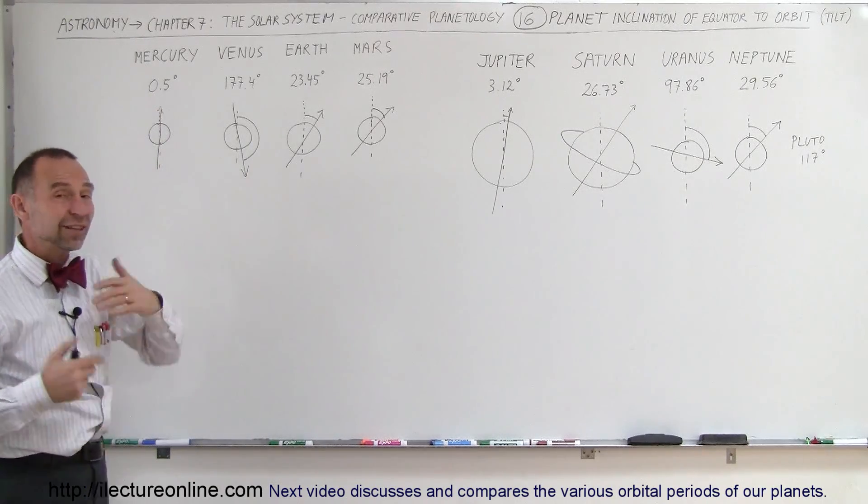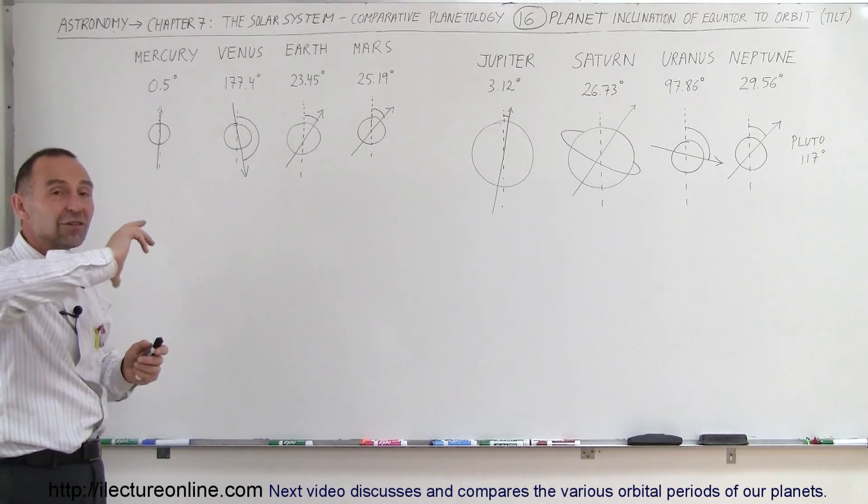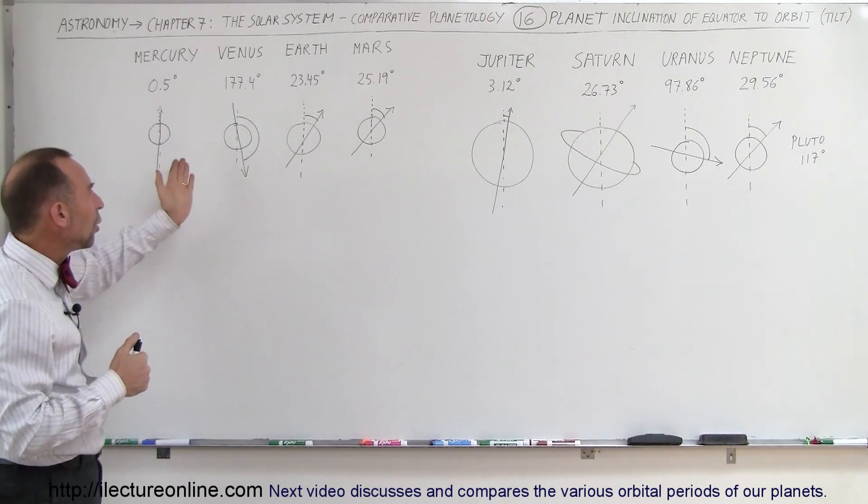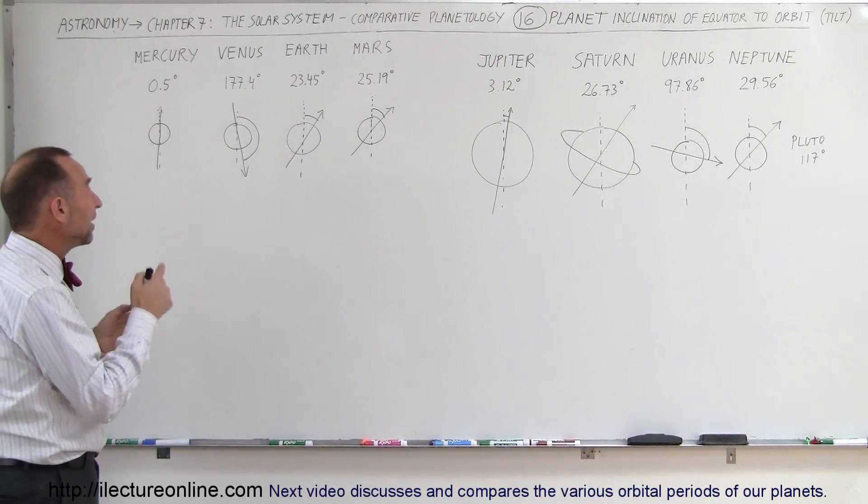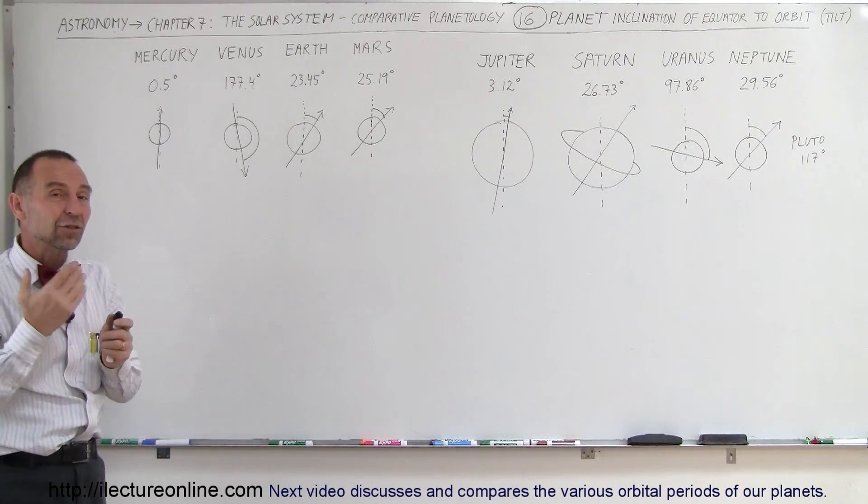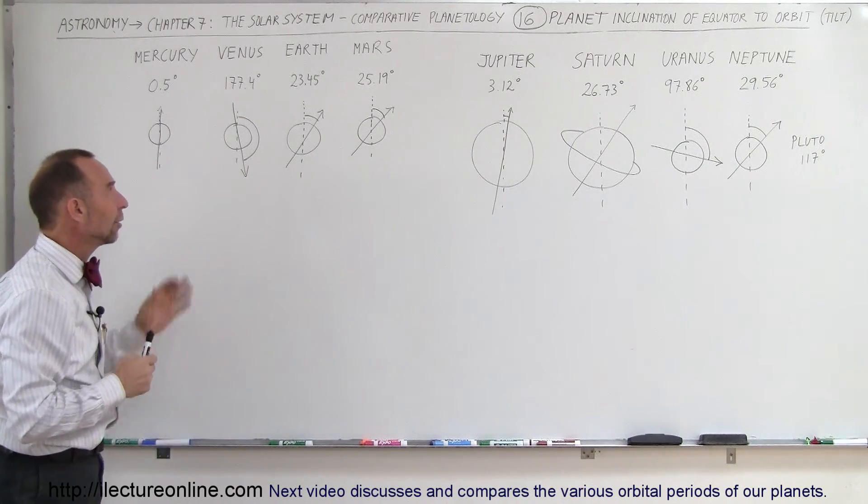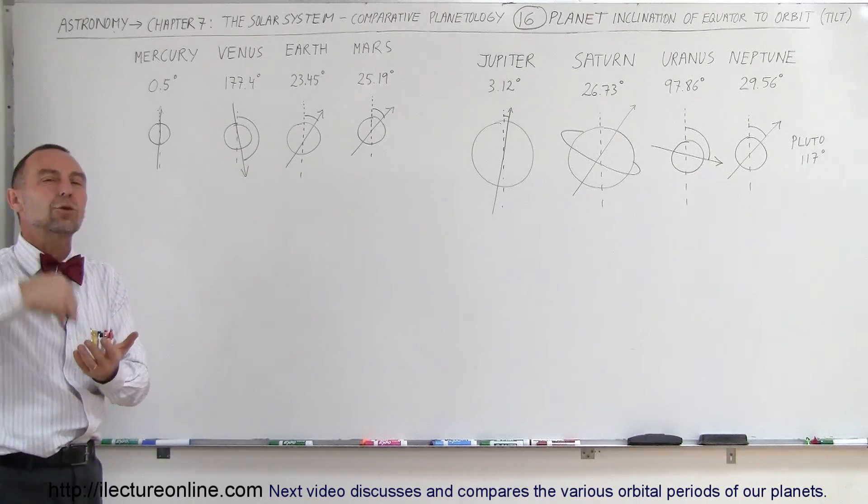Venus, on the other hand, has a tilt of 177.4 degrees, so basically Venus is upside down. Something must have happened in its long history where some large object must have hit that caused Venus to turn around. So basically, Venus rotates on its axis in the opposite direction from the other planets like Earth, Mars, and Mercury, and therefore we call that rotation retrograde rotation.